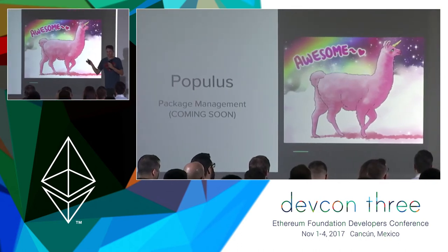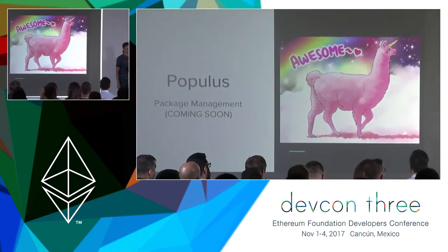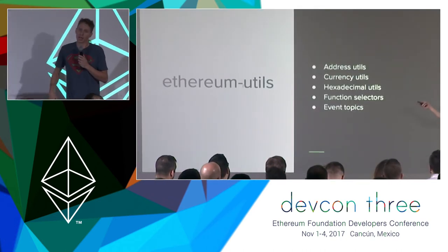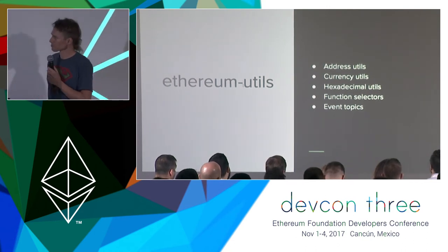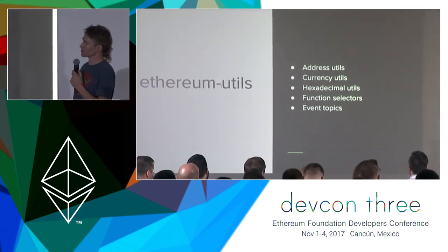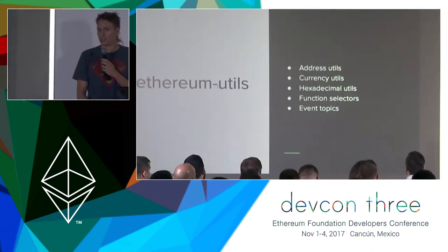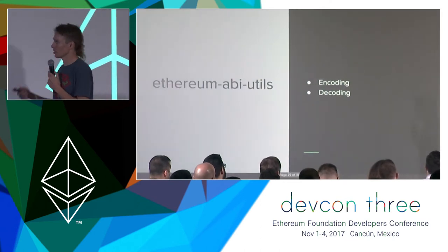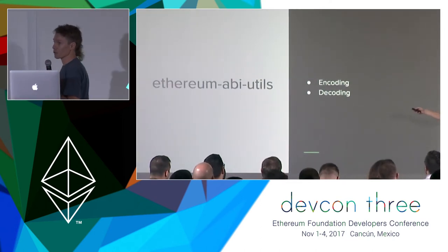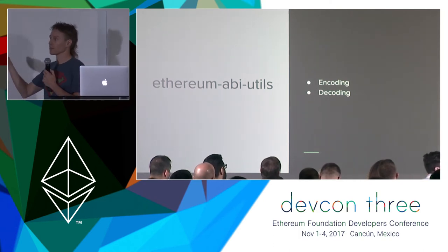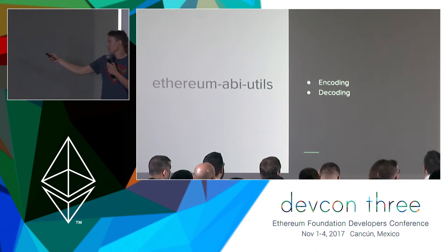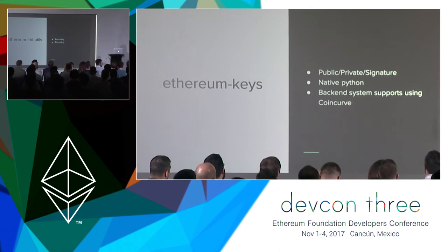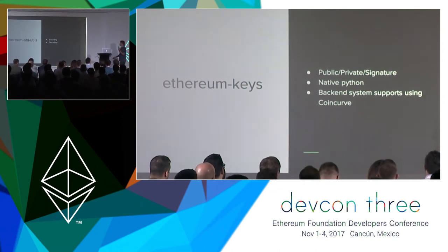And package management — we have this unmerged branch that has all of the ERC-190 package management stuff in it. It is a high priority for us to get this in real soon. Package management is a big deal. There's also an Ethereum Utils library with a bunch of low-level functional functions that do all kinds of useful things that come up commonly when you're doing Ethereum development. We have an ABI Utils library that does all the ABI encoding and decoding — so if you need to do low-level stuff like pulling old transactions and seeing what data they sent, you can do that.